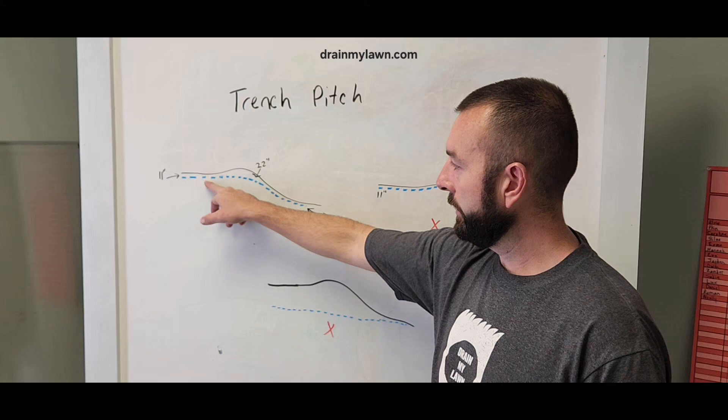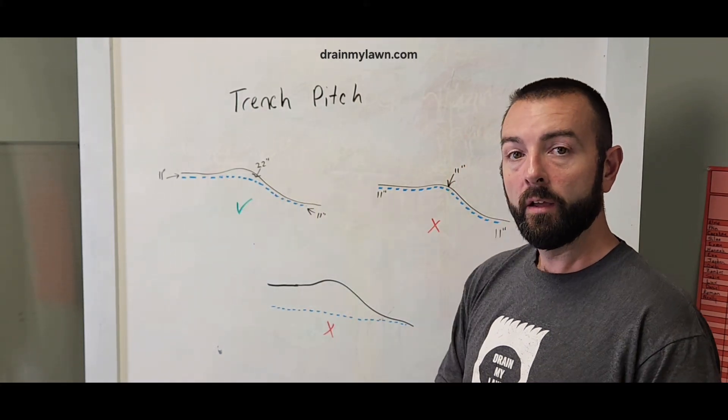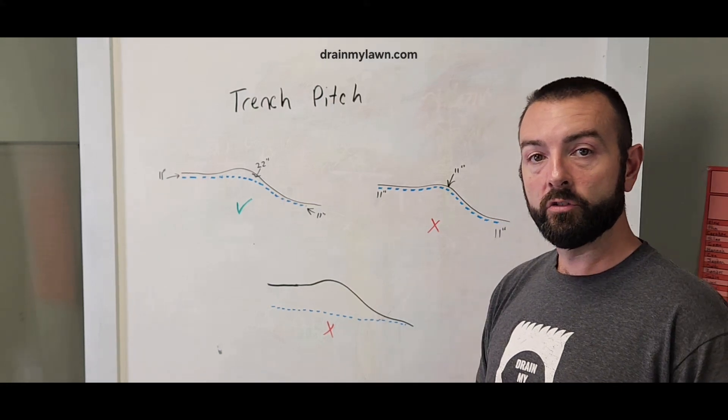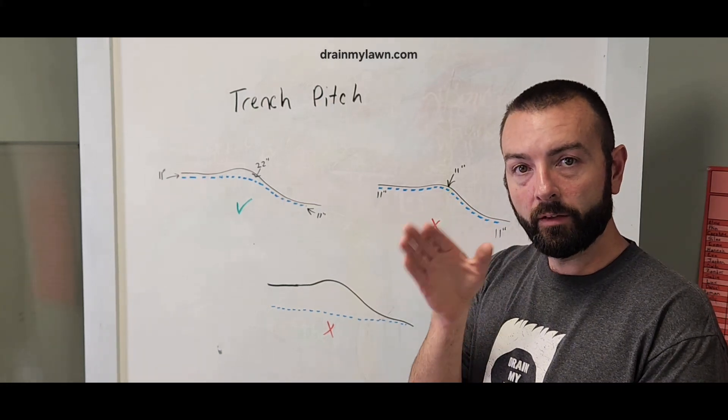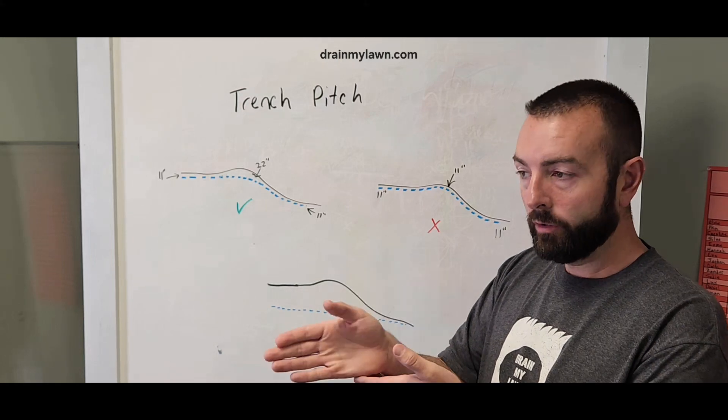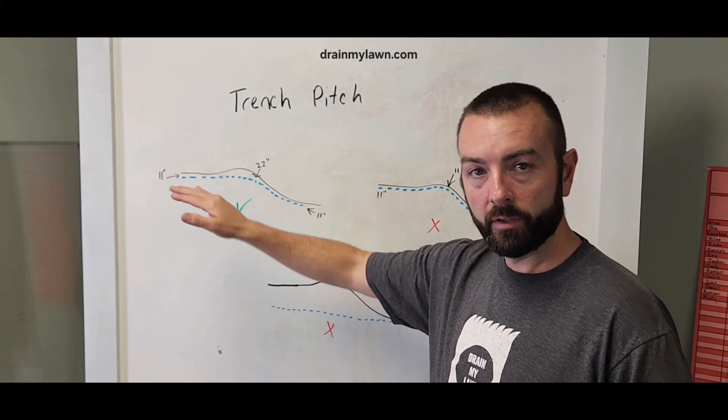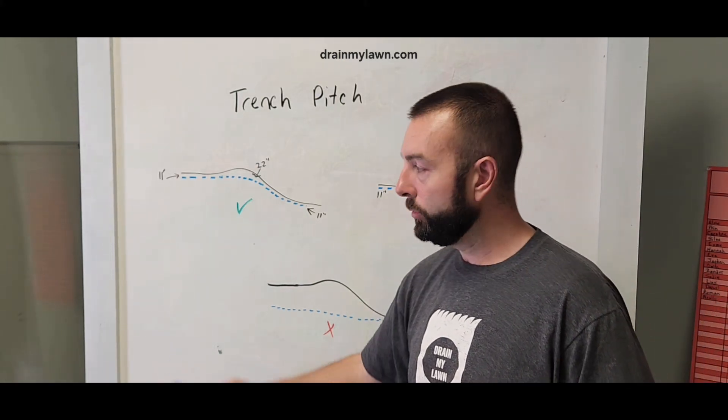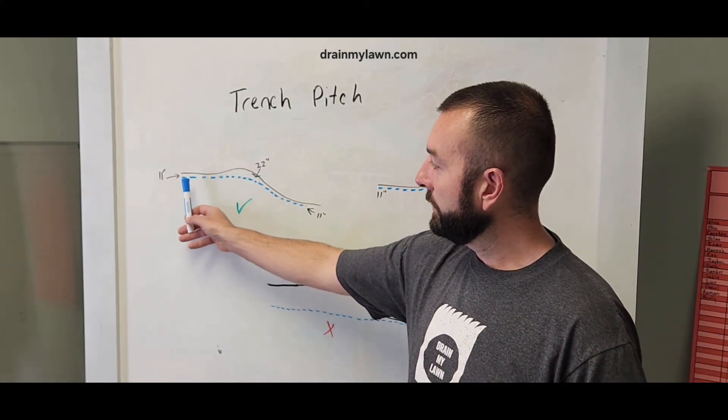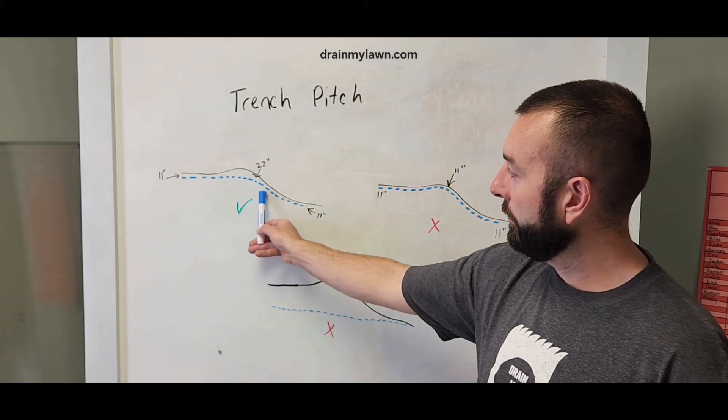You're going to go down here and keep your trench flat or downhill. When you're in challenging situations, flat is okay. You have to be flat to going slightly downhill. You can't raise that pipe up at all. At no point is this pipe able to come up. The trench here is represented by the blue line, the dotted line. You see my trench is staying flat, flat, flat, and then starting to come down.